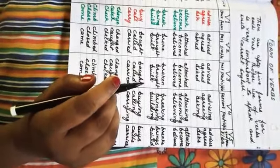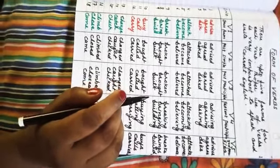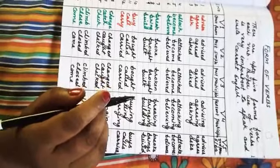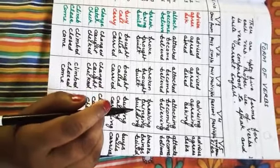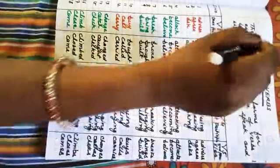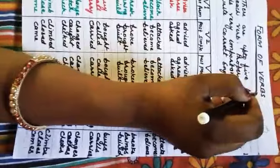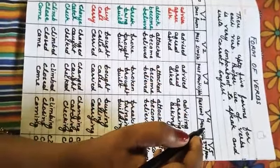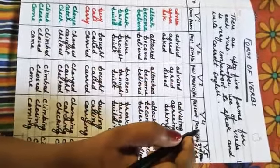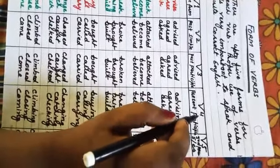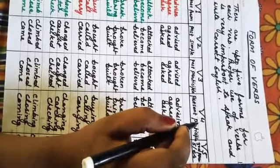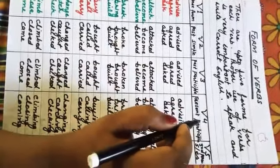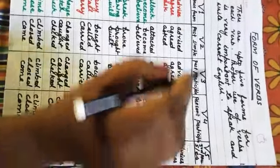Good morning students. In the previous class I told you about the definition of verbs and its kinds. Today I am going to tell you the forms of verbs. You know there are up to five forms for each verb. Proper use of verbs is very important to speak and write correct English.